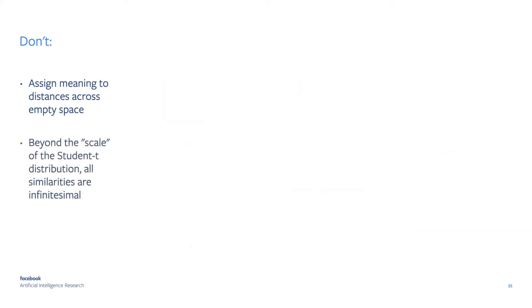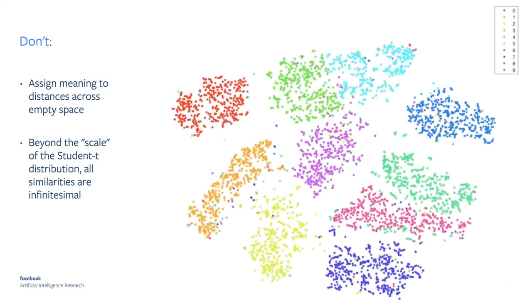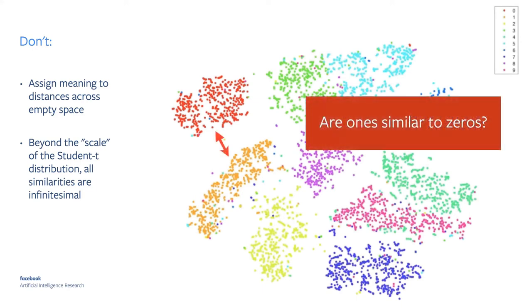Another important caution: you cannot assign much meaning to distances across a large empty space — beyond the scale of the Student-t distribution, all similarities are basically zero and don't mean much. In a map of digit images, the cluster of ones and cluster of zeros may be relatively close together, but their distance exceeds the scale of the Student-t distribution and really doesn't mean anything. You cannot draw conclusions from distances that span empty space.